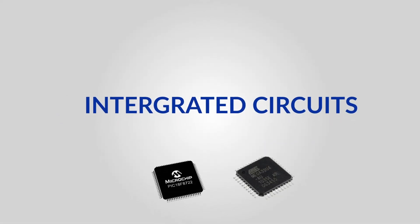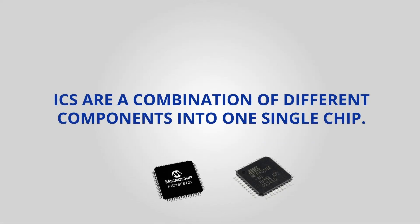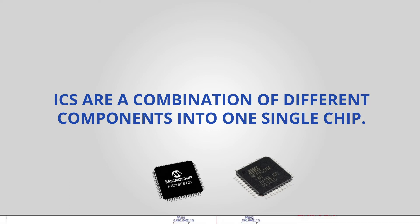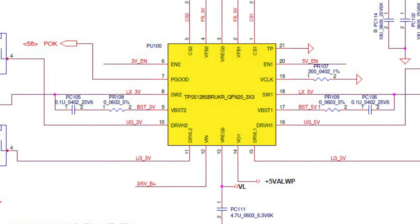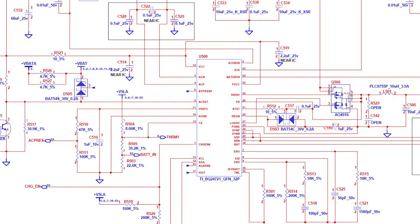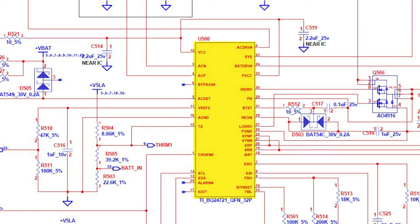Integrated circuits, or ICs, are a combination of different components in one single chip. They are represented by a rectangle or square with lines representing the pin functions. On motherboards, ICs are denoted with the letter U.